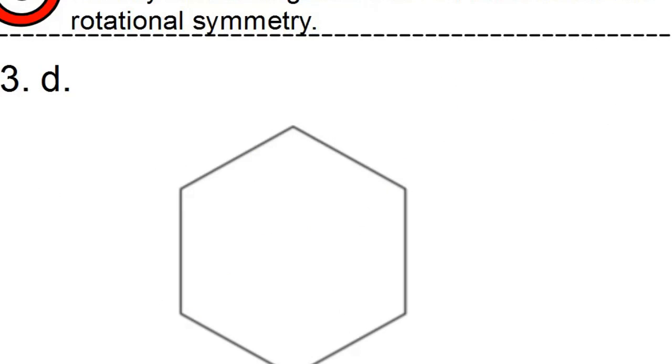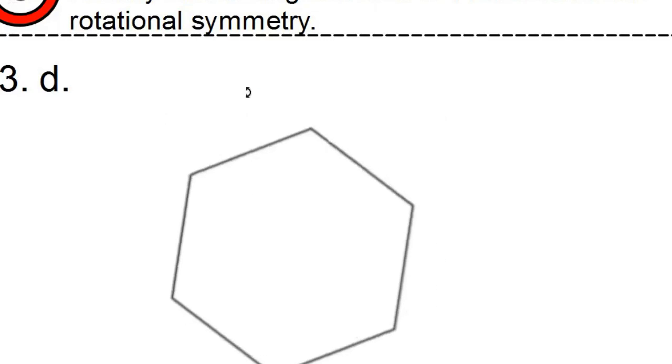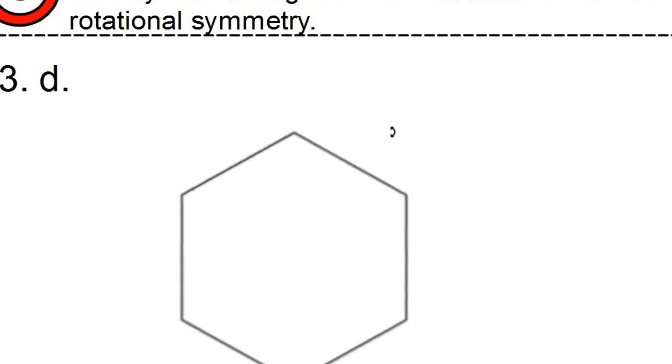Last finalist here. So for part D here, this time I have a regular hexagon. Regular meaning that all the sides are the same length, all the angles are the same. So looking to rotate this one. As I rotate it, it looks the same there.